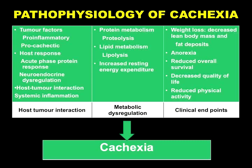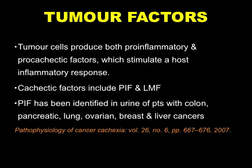For the tumor side, you have pro-cachexic tumor factors that may be released, like TNF-alpha and interleukins. You have the proteolysis-inducing factor (PIF) and the lipid mobilizing factor (LMF) — these lead to breakdown of protein and fat respectively. The proteolysis-inducing factor has been identified in the urine of patients with colon, pancreatic, lung, ovarian, and breast cancers, and has been identified as one of the main factors at play in patients who have cachexia.